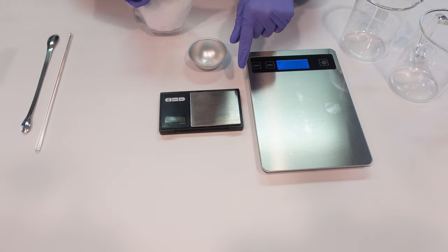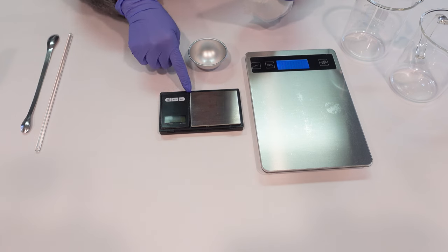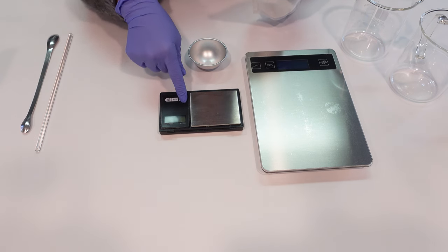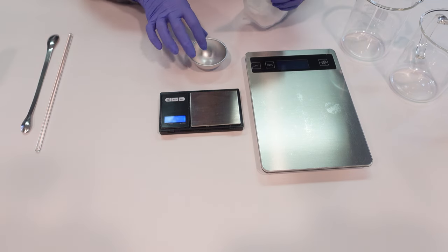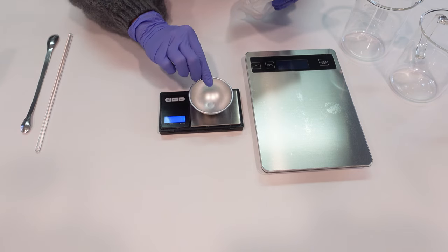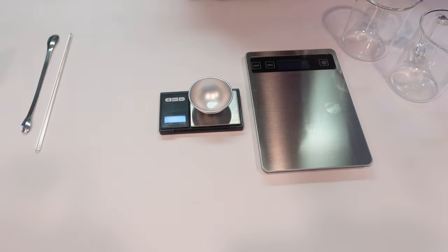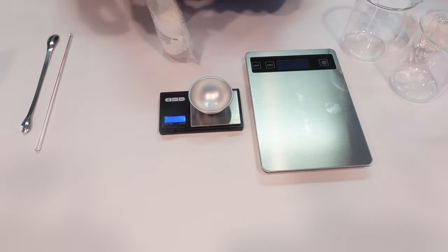I have two scales here. This one is for weighing larger amounts, this one is for smaller amounts. We're making a really small 100 gram batch today, and this one can get down into the hundredth of a gram. Both of these scales you can find on my Amazon affiliate link. The first thing we're going to do is weigh off some niacinamide vitamin B powder.